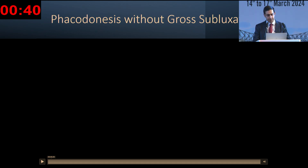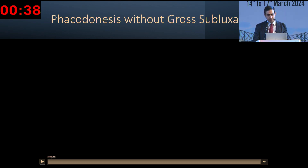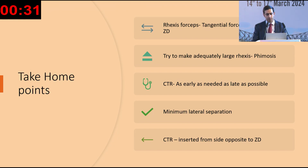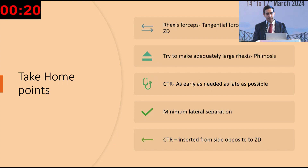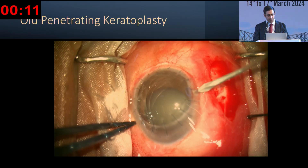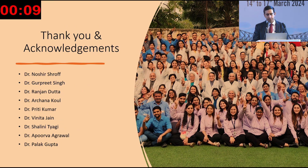At the end, we placed a CTR into the bag. The take-home points: rhexis forceps tangential force should be applied. Try to make an adequately large rhexis to counteract phimosis that tends to happen later. The CTR should be used as early as needed and as late as possible. Minimize lateral separation. The CTR should be inserted from the site opposite to the zonular dialysis.